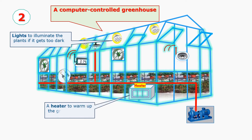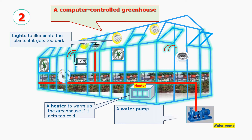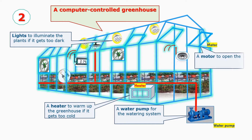Lights are used to illuminate the plants if it gets too dark. A heater is used to warm up the greenhouse if it gets too cold. A water pump is used for the watering system, and a motor is used to open the window if it gets too warm inside.